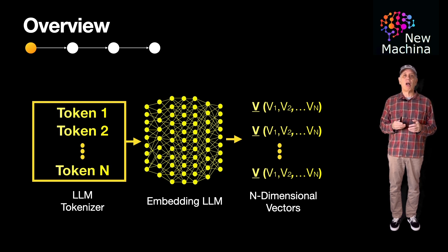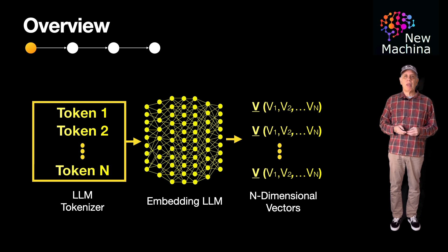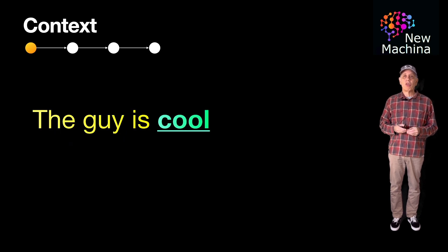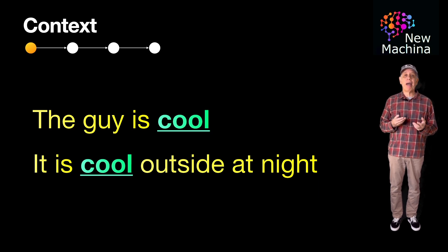A nuanced feature of LLM embeddings is that they are context sensitive. What does this mean exactly? The same word can have different embeddings depending on the surrounding text, allowing the LLM to capture the meaning of the word. In the first sentence, "the guy is cool," the word cool is used to describe someone who's trendy or hip. In the second sentence, "it is cool outside at night," the word cool is used to describe temperature. The same word cool will have a different embedding because of the surrounding text, allowing the LLM to correctly capture the meaning of cool in both sentences.